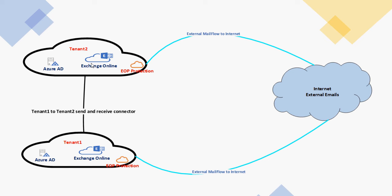We have three options available when we try to configure Tenant 1 to Tenant 2 send and receive connectors. Let's go and explore them and see which one is more relevant to your organization.